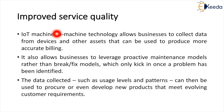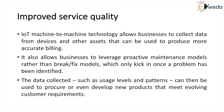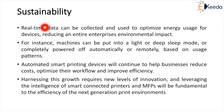For improved service quality, IoT machine-to-machine technology allows businesses to collect data from devices and other assets that can be used to produce more accurate billing. It also allows businesses to leverage proactive maintenance models rather than break-fix models, which only kick in once a problem has been identified. The data collected – such as usage levels and patterns – can be used to procure or even develop new products that meet evolving customer requirements. For sustainability, real-time data can be collected and used to optimize energy usage for devices, reducing an entire enterprise's environmental impact.